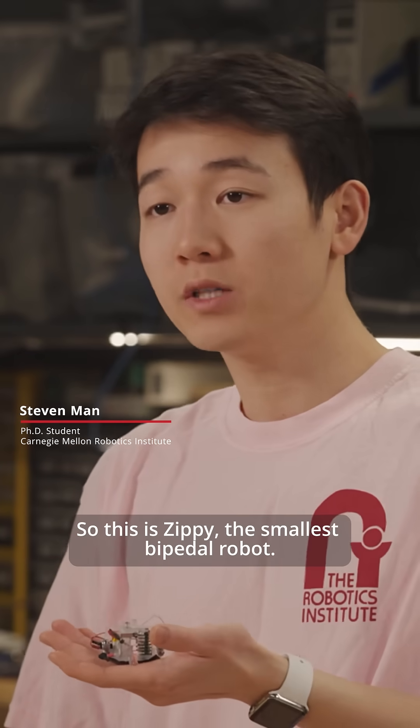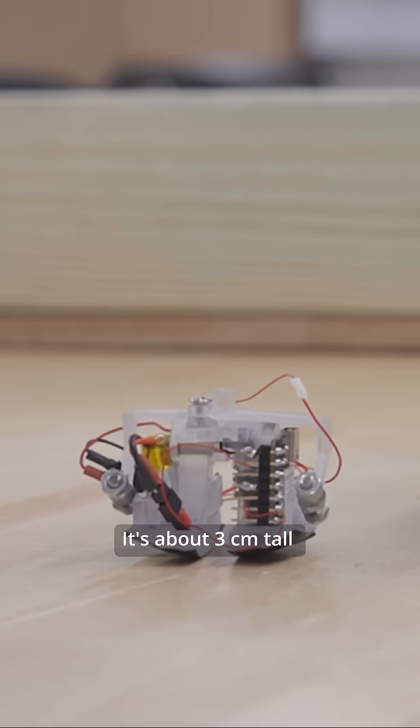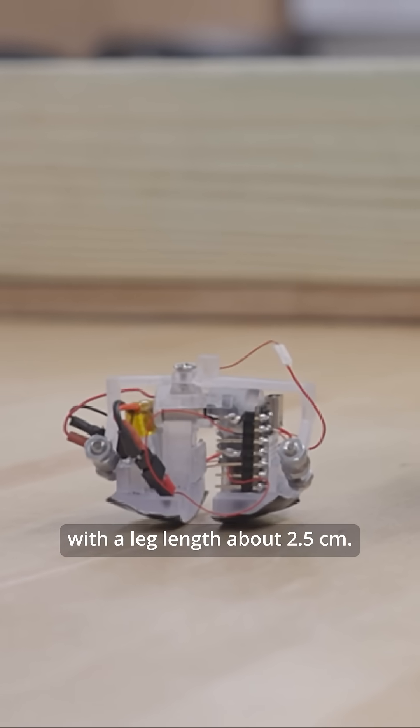So this is Zippy, the smallest bipedal robot. Zippy is pretty short. It's about three centimeters tall with a leg length about 2.5 centimeters.